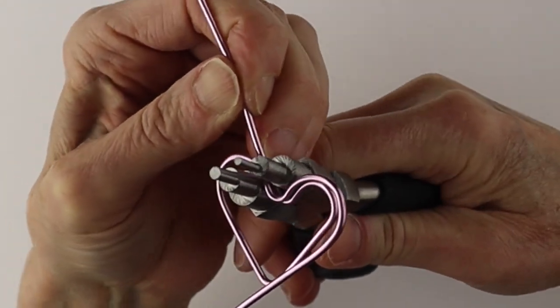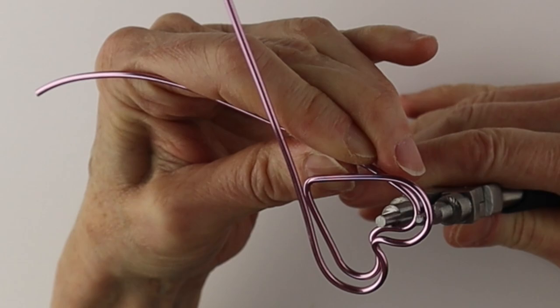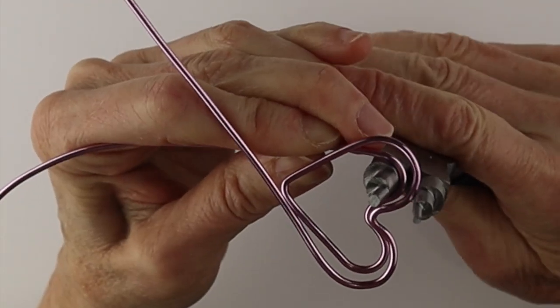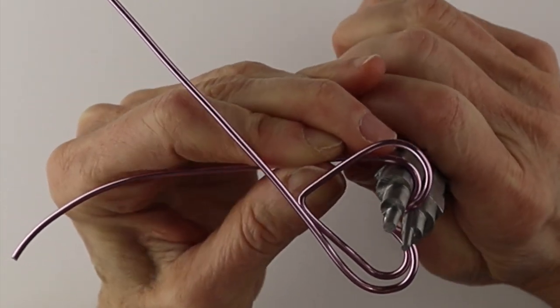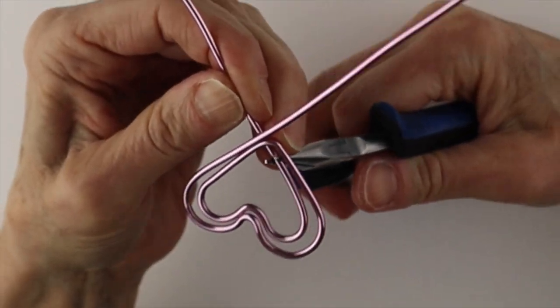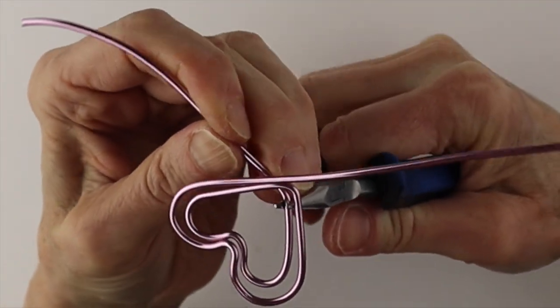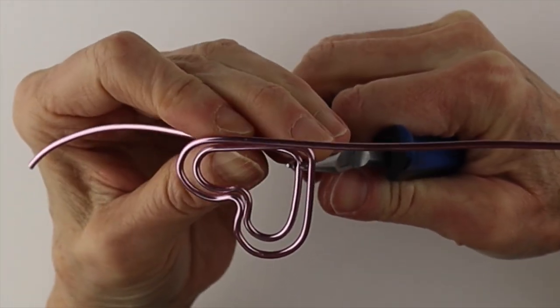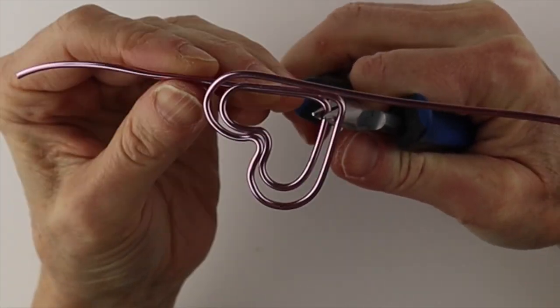So again with the loop bring it down to form a heart within a heart. Push it right down, smooth it out with your fingers, flat pliers again to push it up again. We're going to do one more heart within a heart.